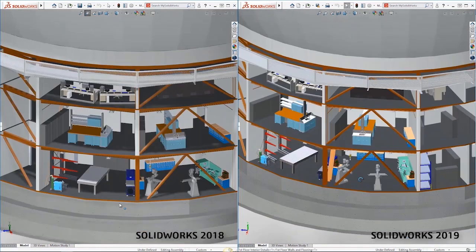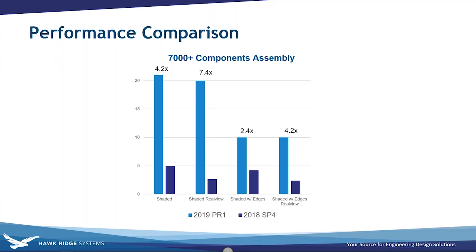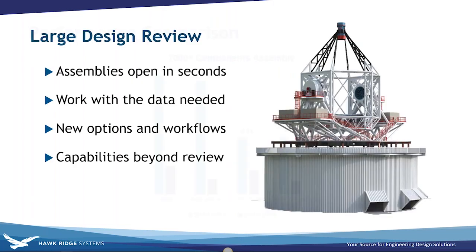SOLIDWORKS is taking advantage of higher-end graphics cards to give you a better user experience, especially when working with large assemblies. We ran some tests and found the best scaling happens with larger assemblies — with 7,000+ components, we saw anywhere from 2.4 to 7.4 times the performance improvement in frames per second. We ran this on a Dell Precision 5520 with an NVIDIA Quadro M1200 GPU. Not every computer will see this, but you should see much better performance with large assemblies.